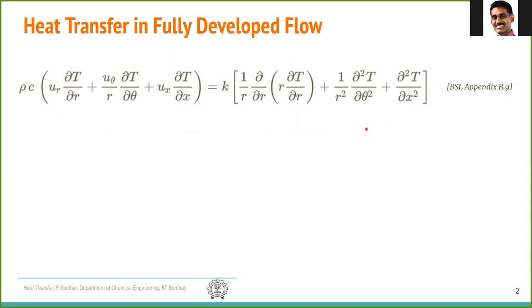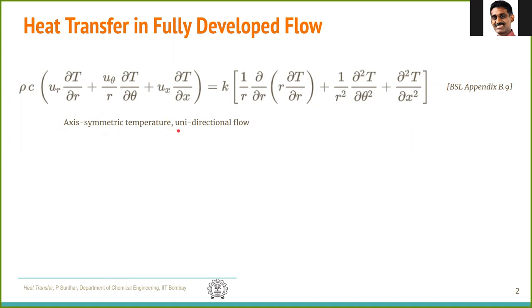Now let us look at various approximations and how we can drop terms in this equation. First, we assume that the temperature is axisymmetric, meaning there is no variation in the theta direction. The flow is unidirectional, meaning flow is only in the x direction, so u_r and u_theta are zero. Consequently, the u_r term is zero, the u_theta term is zero, and partial²T/∂θ² is also zero.